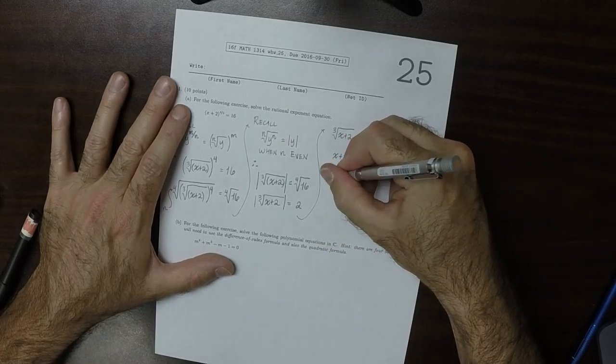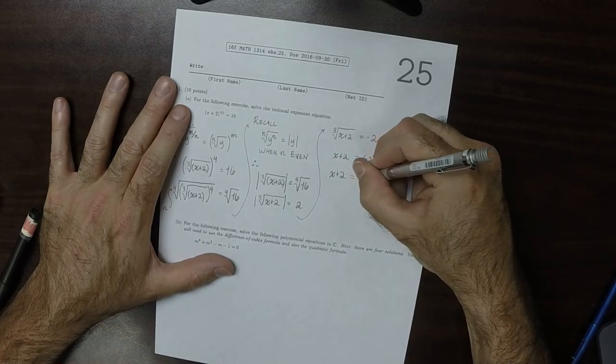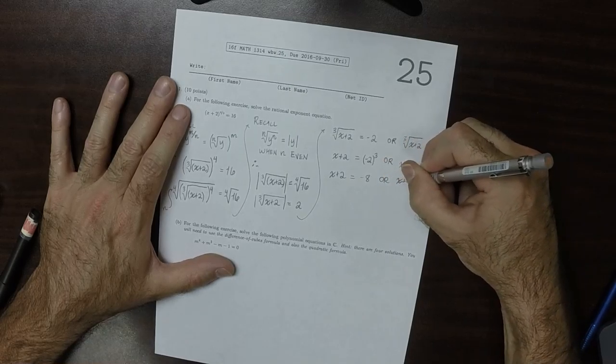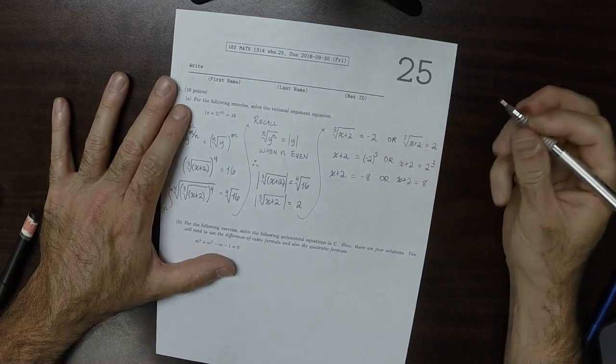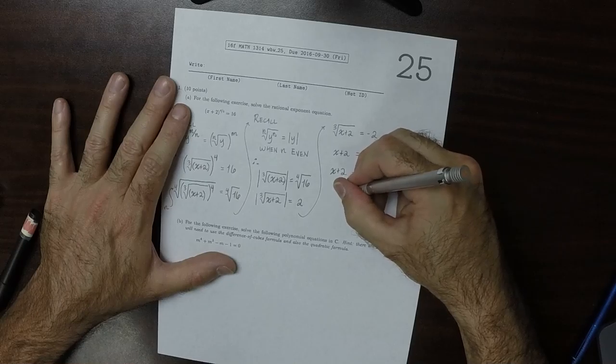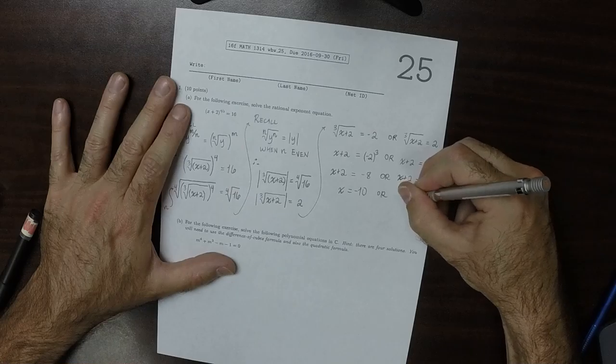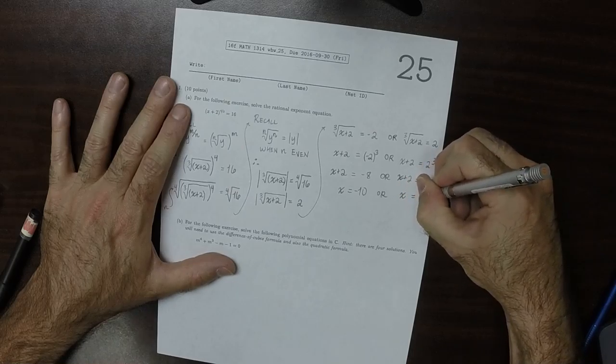Then x plus 2 is negative 8, or x plus 2 is 8. So x is negative 10, or x is 6.